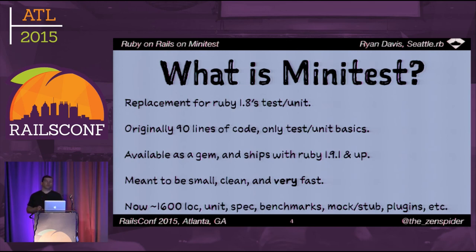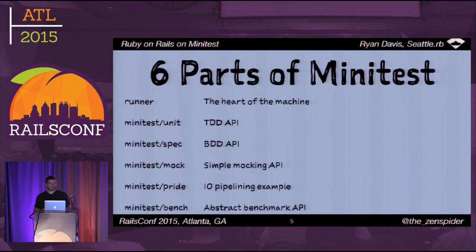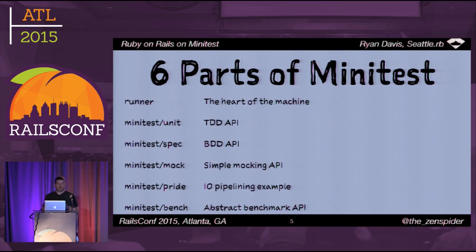It supports unit style, spec style, benchmark style, very basic mocking and stubbing, has a very flexible plug-in system. There are six main parts of Minitest: the runner, Minitest::Test which is the TDD API, Minitest::Spec which is the BDD API, Minitest::Mock, pride, and bench.